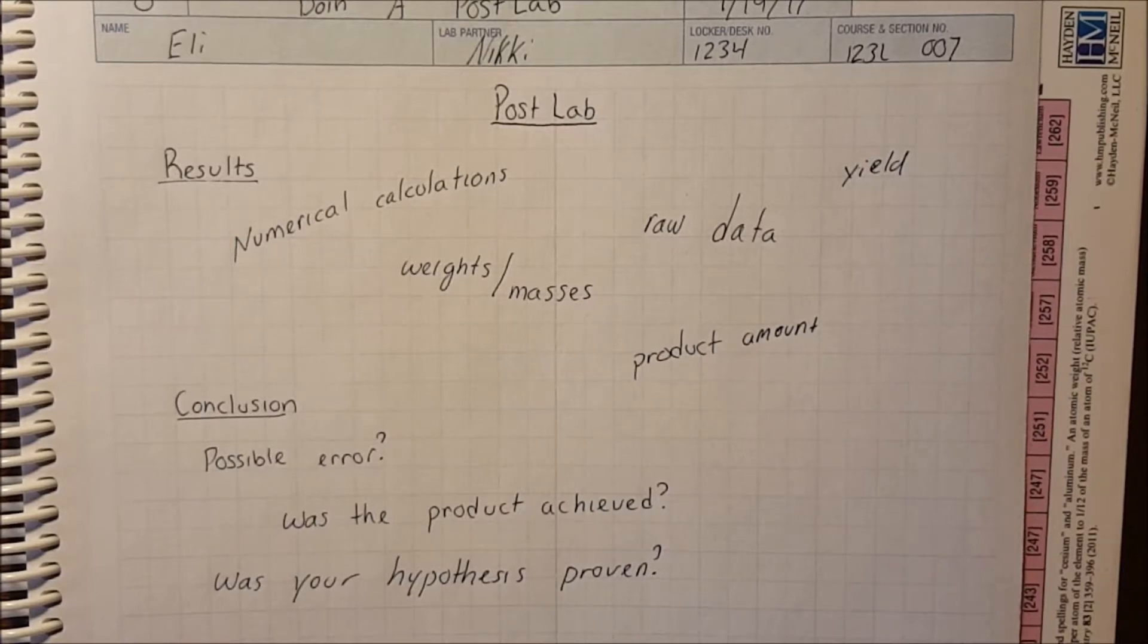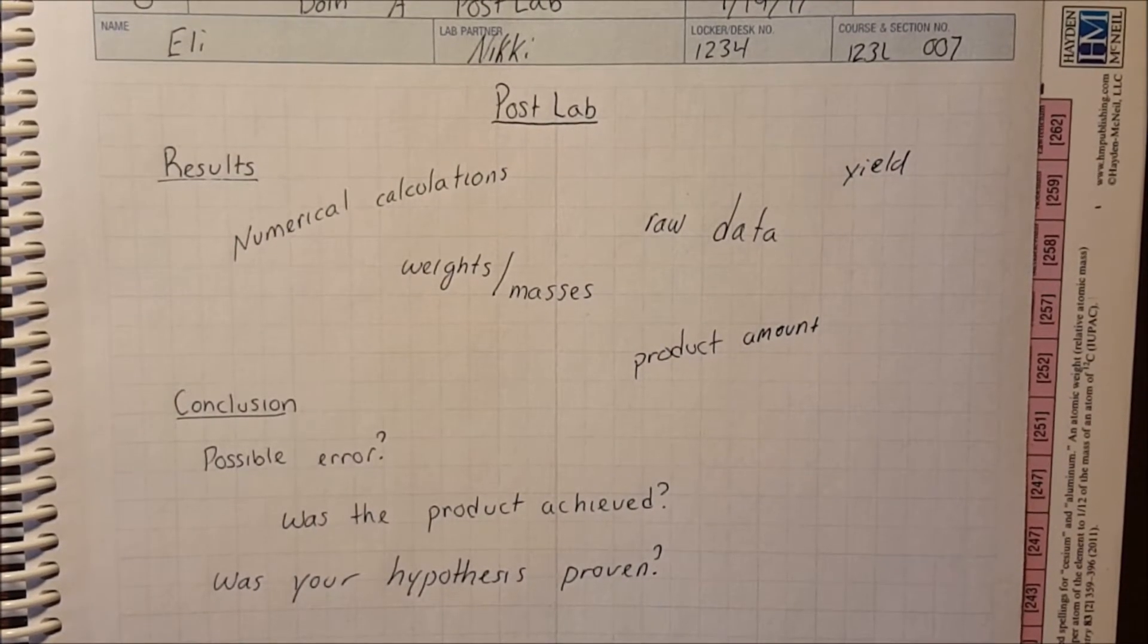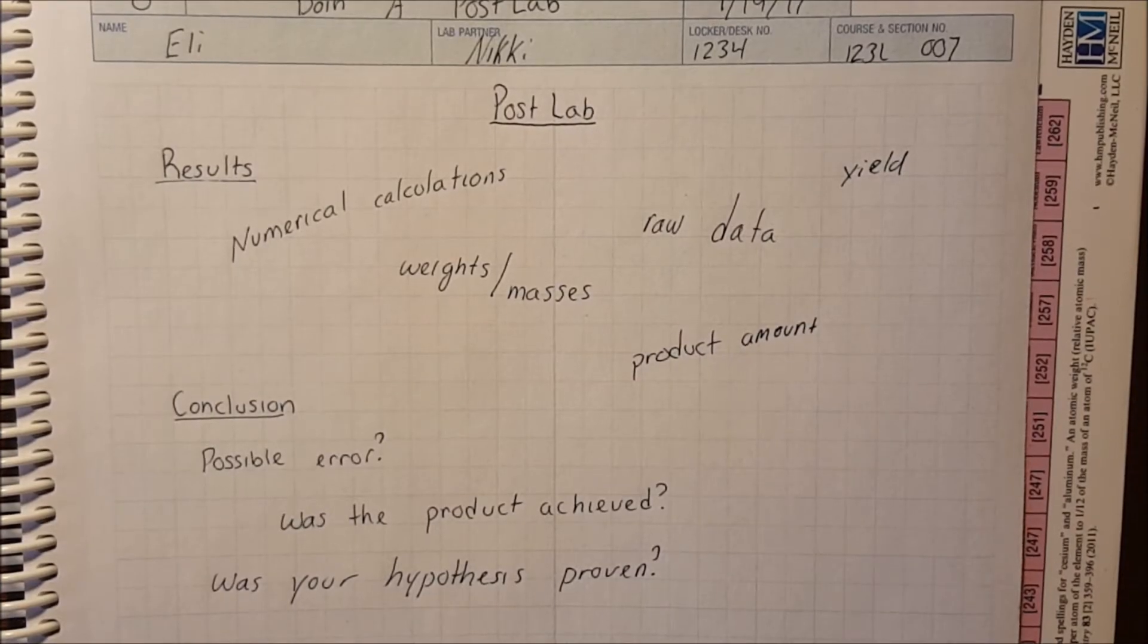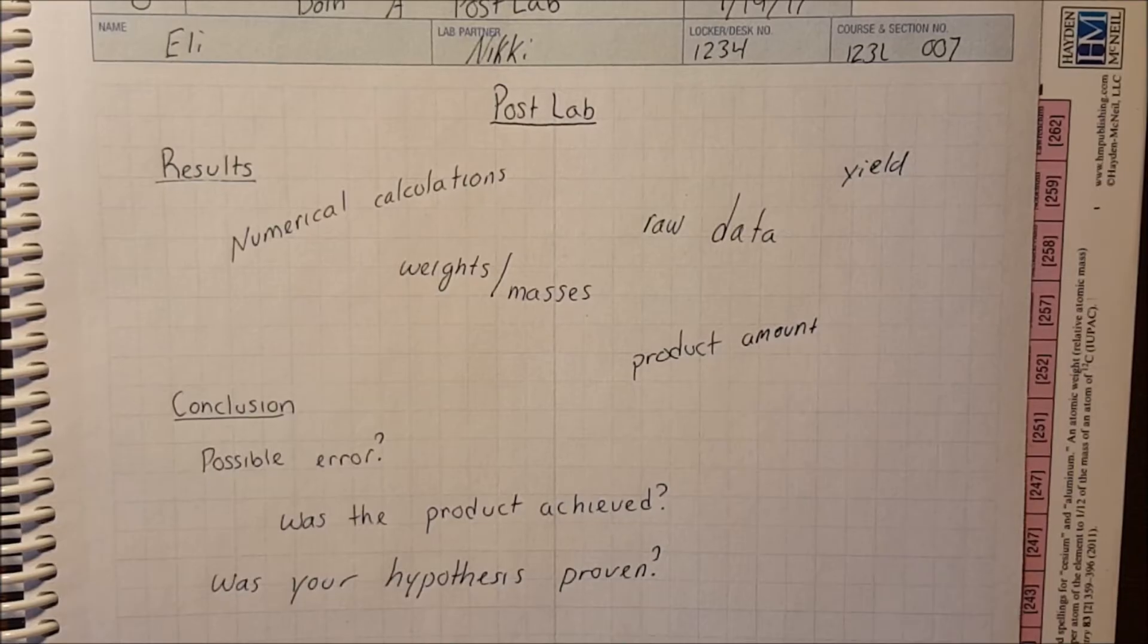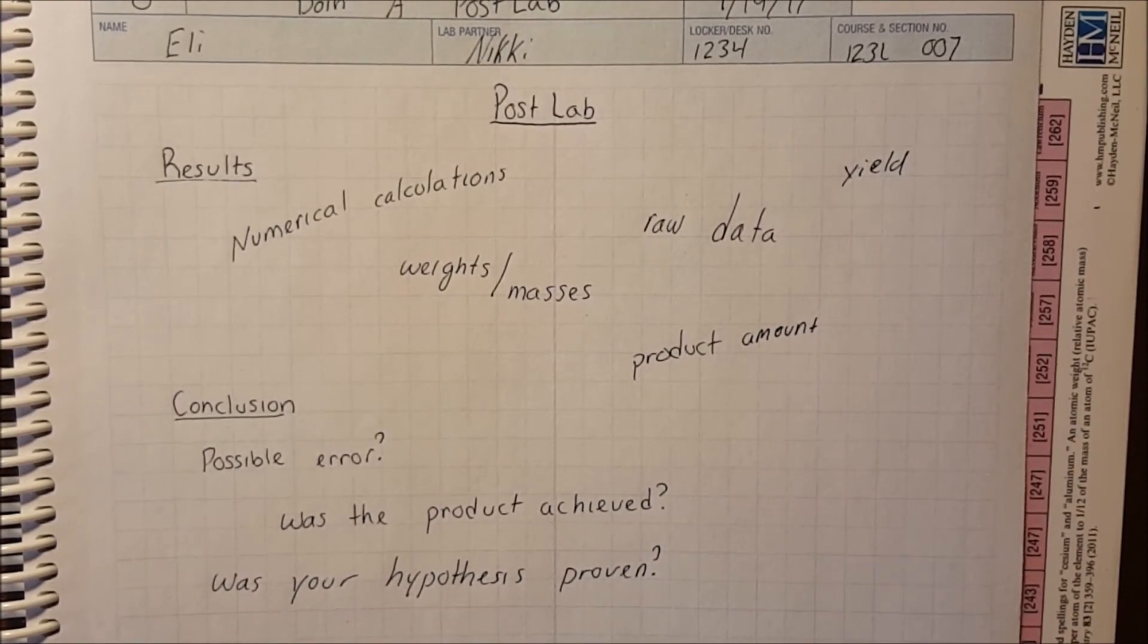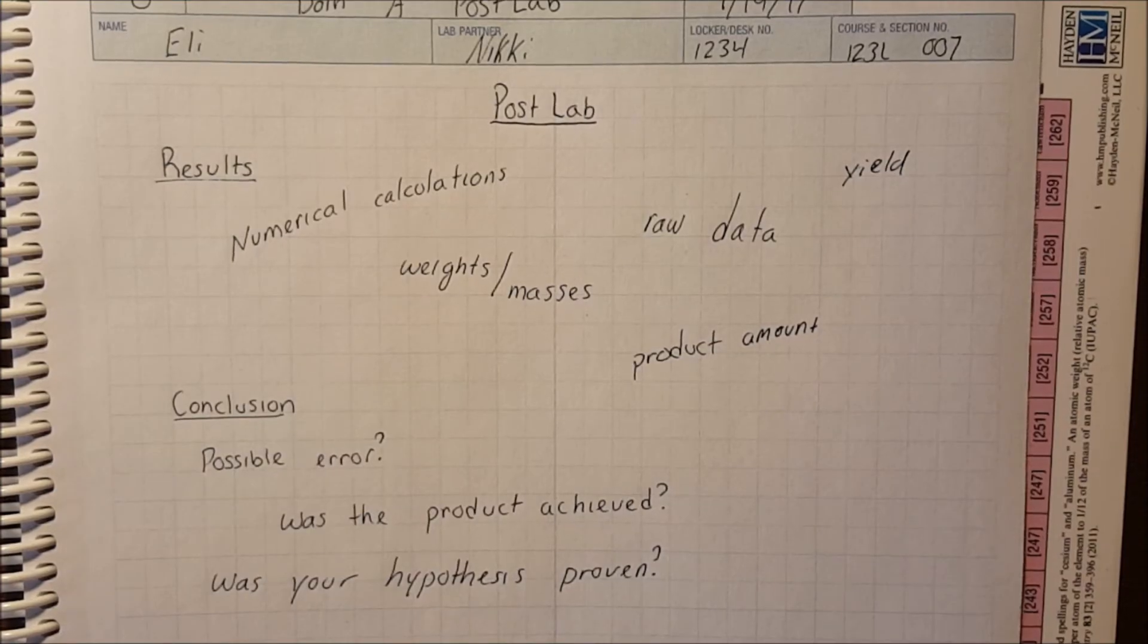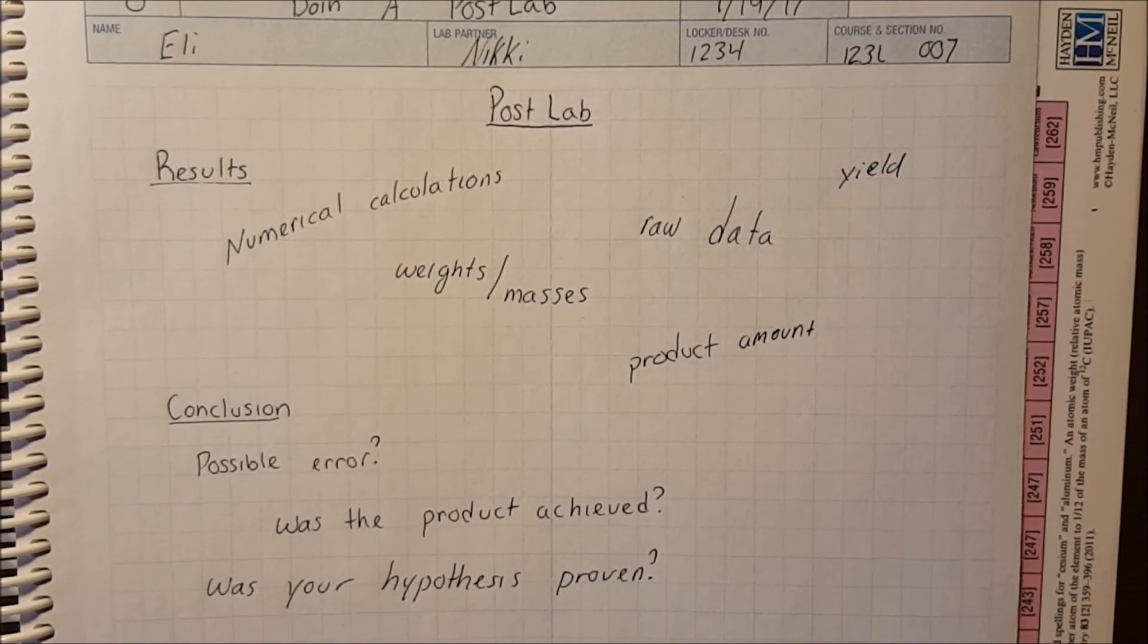The next part is the conclusion. This is where you'll summarize what happened during your procedure in lab. You write about whether your hypothesis was correct, were there any potential sources of error, and did your numbers make sense in your results section? Did you get a good yield? Lastly, you have your post lab questions. These are also found at the end of the experiment in your lab manual.